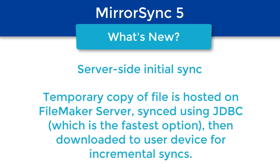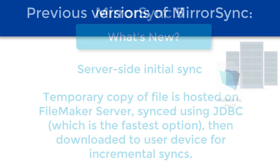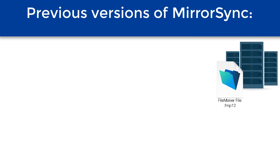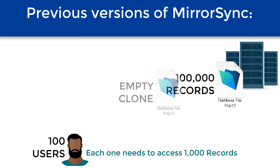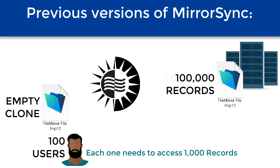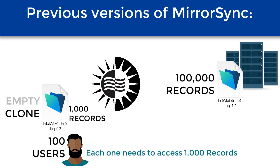This is the capability to do server-side initial syncs. In previous versions of MirrorSync, say you've got a very large database with 100,000 records and 100 users — each of them having 1,000 records they should have access to. The way you would do that in MirrorSync is you'd save an empty clone from the server, give them that empty clone, run the sync as them, and filtering scripts would make it so they only get the 1,000 records they're supposed to see. That initial sync would be the big one to get everything caught up initially.